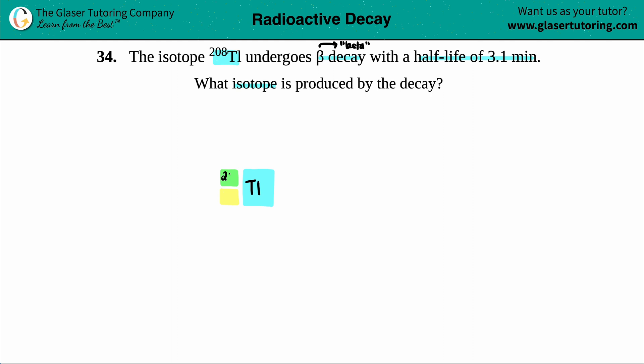They're telling us we have a mass number of 208. The mass number always goes up on the top, and the atomic number, which they didn't give us, goes on the bottom. But we've got a periodic table.